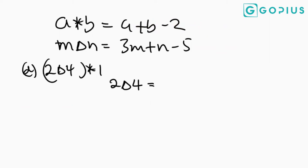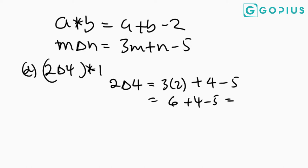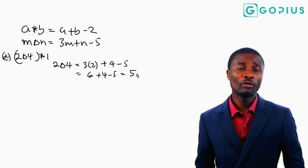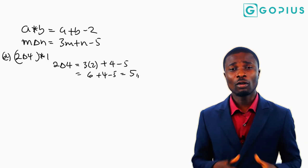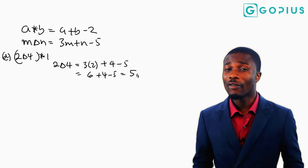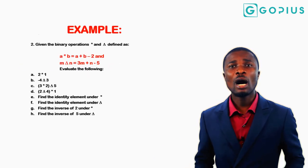For 2 delta 4, m is 2 and n is 4. We get 3 times 2 plus 4 minus 5, which equals 6 plus 4 minus 5. That gives us 10 minus 5, which equals 5. So that is the value for the bracket in (2 delta 4) star 1. After finding the bracket, use that answer to evaluate with what is outside.